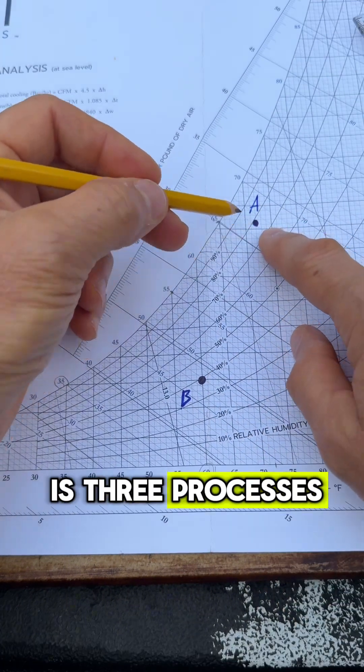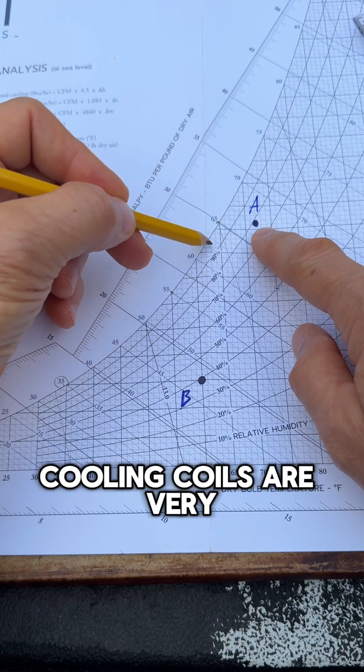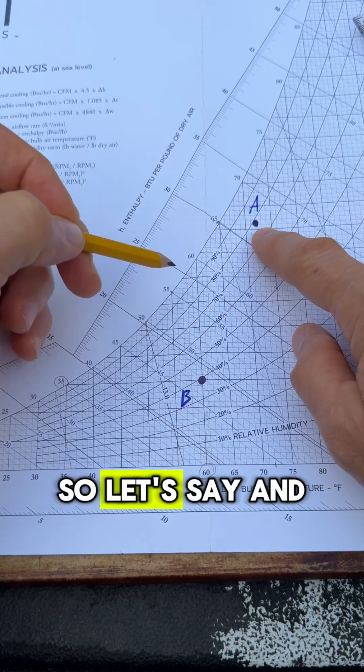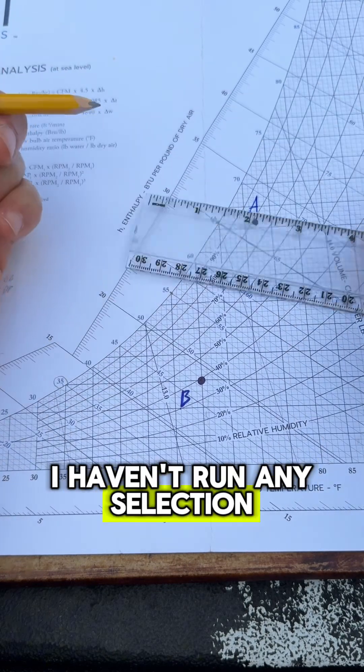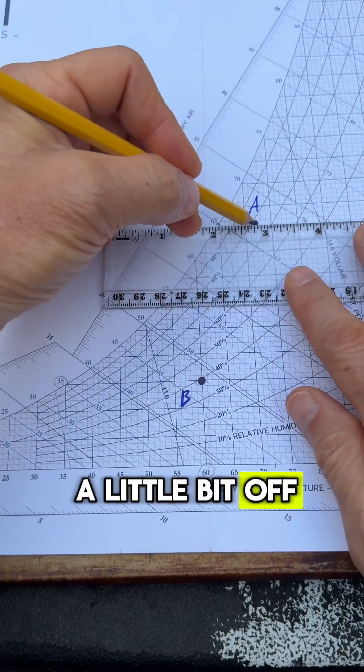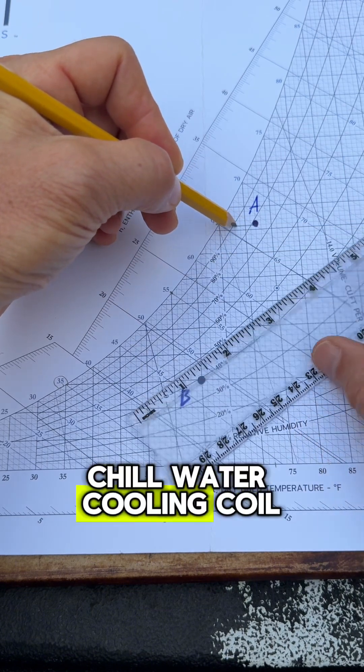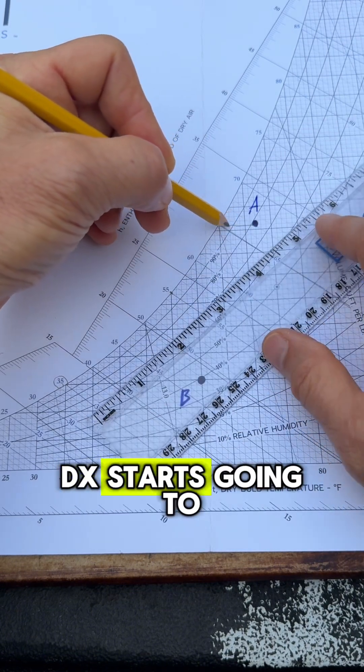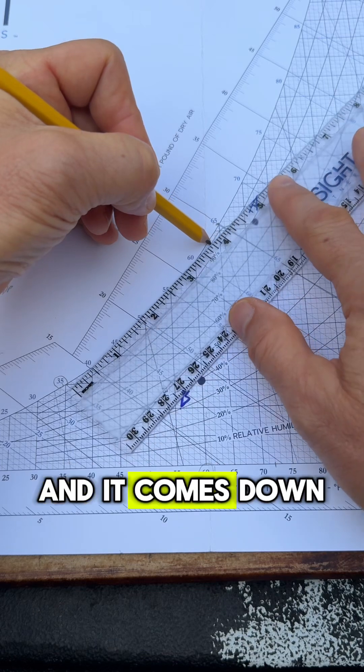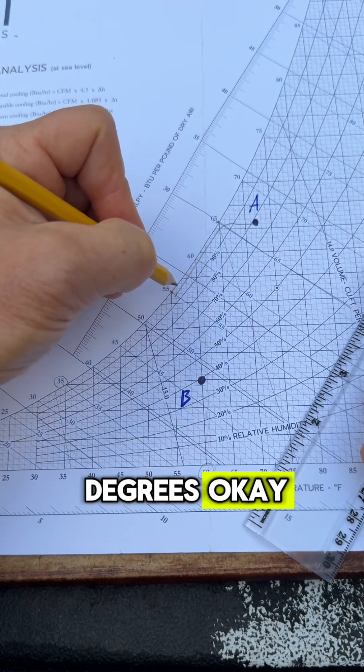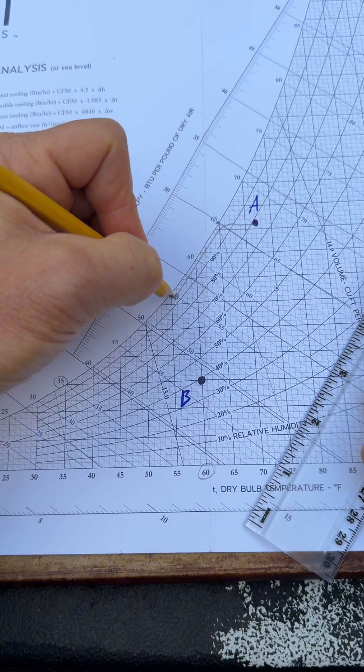To me, this is three processes. Cooling coils are very good at getting you down into this region here. I haven't run any selection, so some of these values are going to be a little bit off, but you get the idea. Let's say we run this through a cooling coil - chill water cooling coil or DX - it starts going to the saturation line and comes down to let's say 55 degrees.